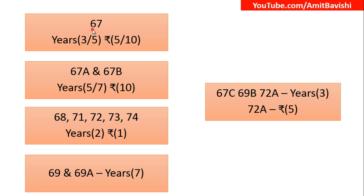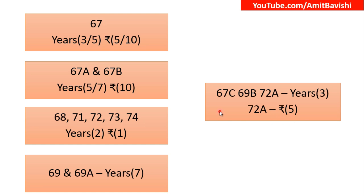Quick recap: 67 — 3 years and 5 lakhs; 5 years and 10 lakhs. 67A and 67B — 5 years, 7 years and 10 lakhs. Sections 68, 71, 72, 73 and 74 — 2 years and 1 lakh. Sections 69 and 69A — 7 years, no monetary fine. Sections 67C, 69B and 72A — 3 years imprisonment, and just for 72A there is also a monetary fine of 5 lakhs.